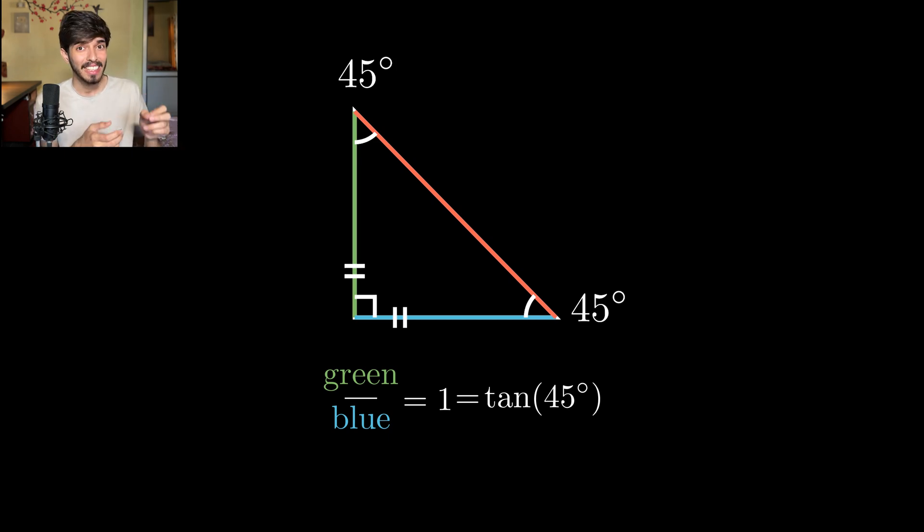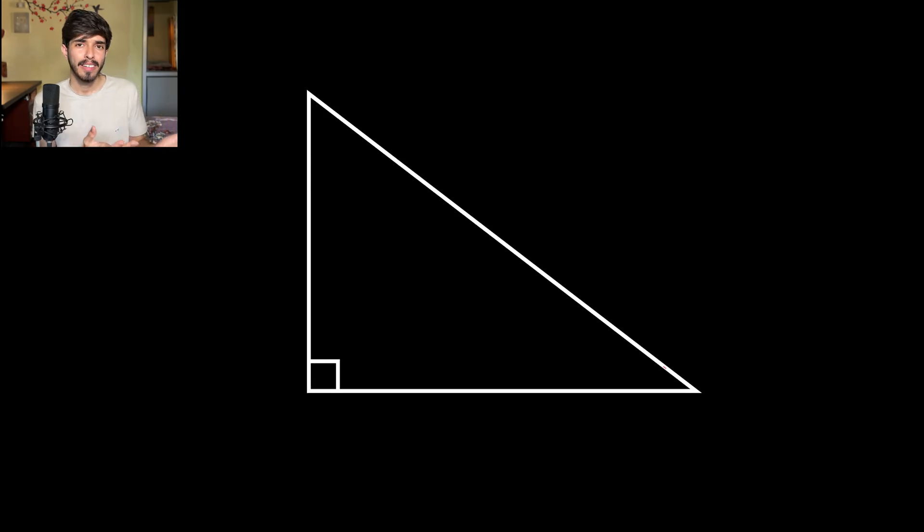See, without even learning trigonometry, you know what the value of tan 45 is. Now you just have to figure out what this tan 45 means. Your concepts are like developing. Now let me tell you some names, some conventions. Now instead of 45 degrees, let's keep this angle as an arbitrary angle. Let's say theta.